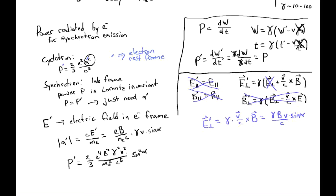Recognizing that we're highly relativistic and taking v ≈ c, and since P = P' (power is Lorentz invariant), the synchrotron power in the lab frame is P = (2/3) e^4 B^2 gamma^2 sine^2(alpha) / (m_e^2 c^3).